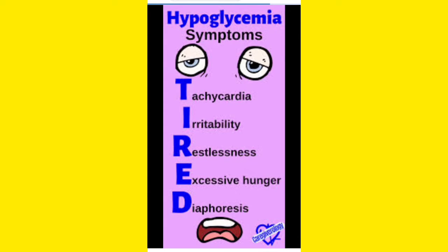Hypoglycemia: hypo means decrease, glyc means glucose, and emia means blood. So hypoglycemia means a decrease in glucose level in the blood. This decrease in blood glucose level has many symptoms: tachycardia, irritability, restlessness, excessive hunger, and diaphoresis.